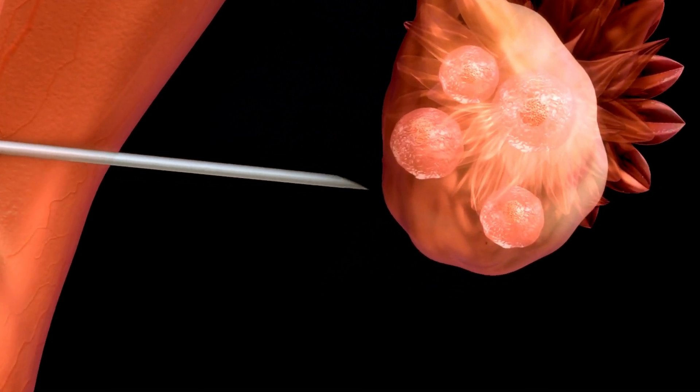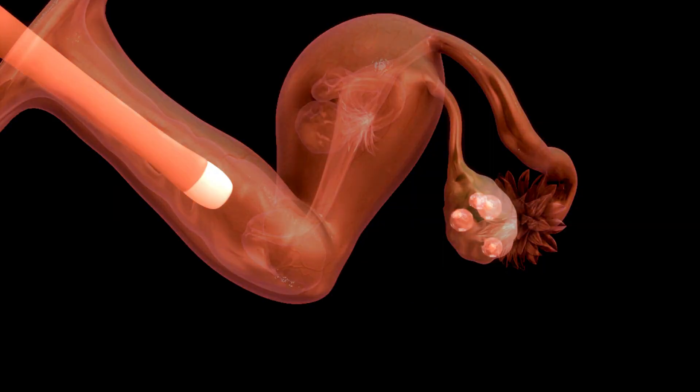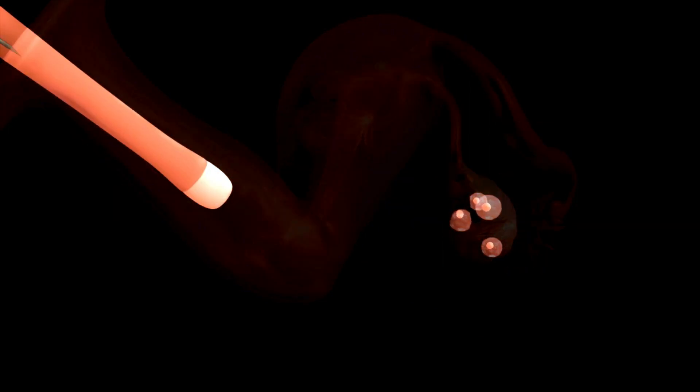The needle is guided into a follicle containing an egg, which is then pulled and pushed into the needle, moving to the test tube. This process is repeated with other ovary and follicles.